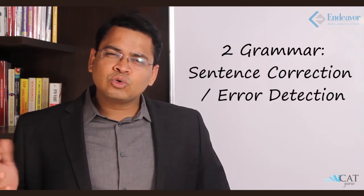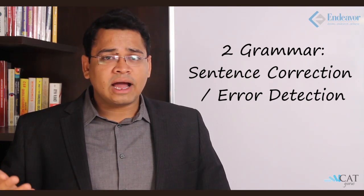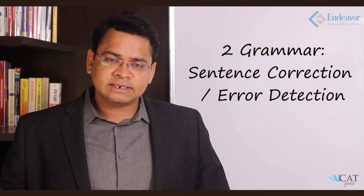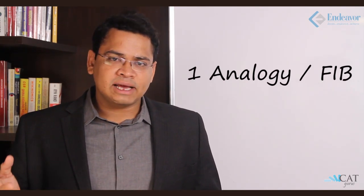That brings us to 9 to 10 questions of reading comprehension, 3 of para jumbles, 3 of logical continuation, and 3 of logical discontinuity. After that, approximately 2 questions of grammar — either in the form of sentence correction or error detection. One to 2 questions were of vocabulary, though vocabulary was not directly asked as such; it appeared in the form of passage completion or fill in the blanks.